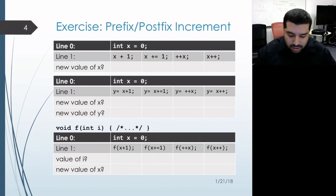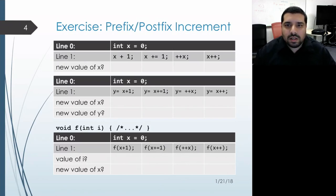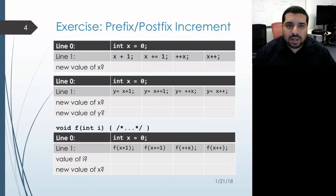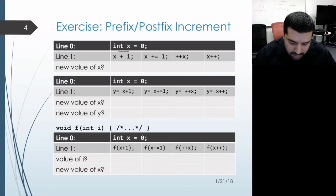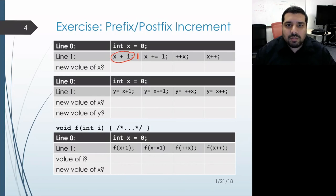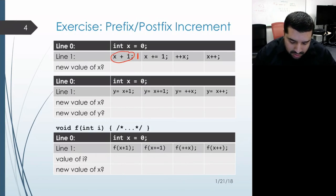Looking at the first example, we start off with x being initialized to 0, and then on the next line we just have the expression x plus 1. This expression as a whole evaluates to the value 1, however it doesn't actually modify x, so x retains its previous value of 0.